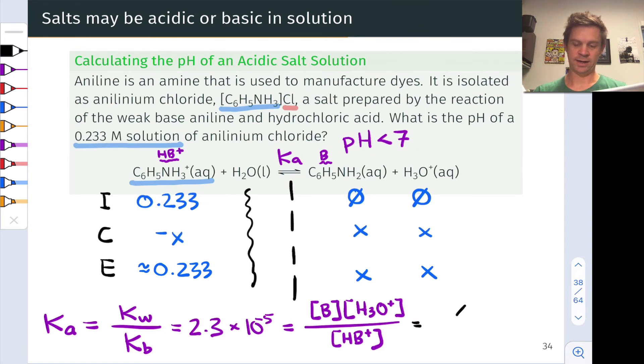And now we can plug in those values that we got from the ice table. We've got an x squared in the numerator. We've got a 0.233 in the denominator. And now we can solve for x. And in solving for x, we arrive at x is equal to 0.0023 molar.